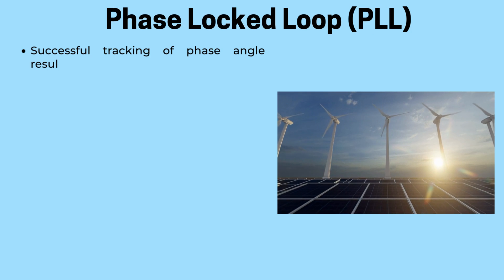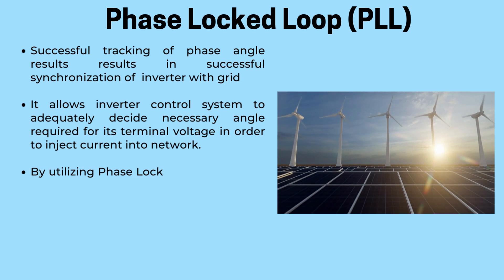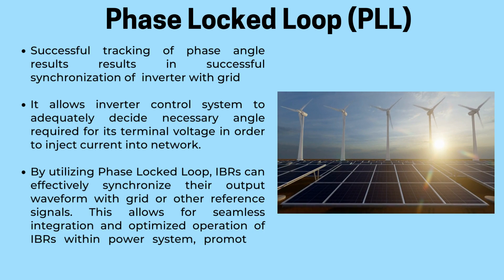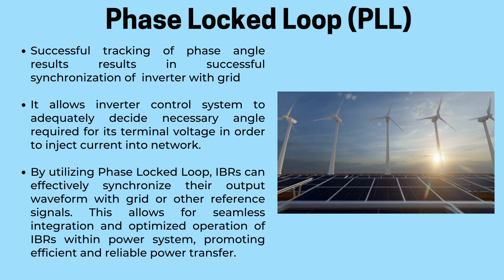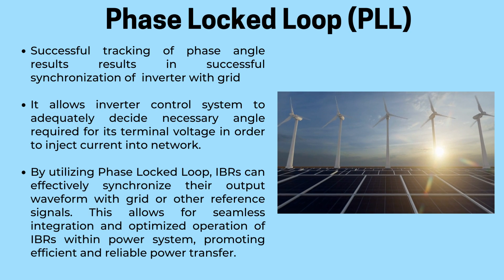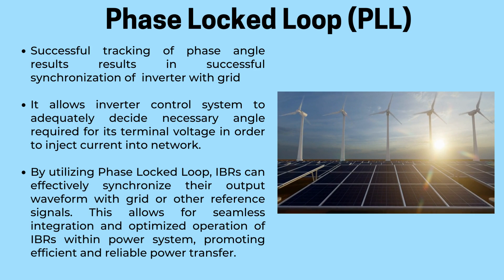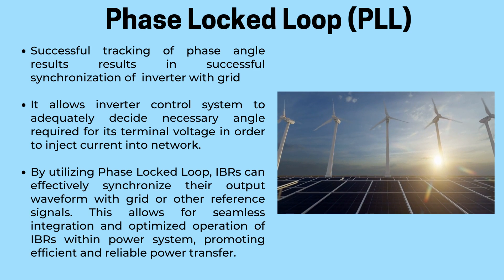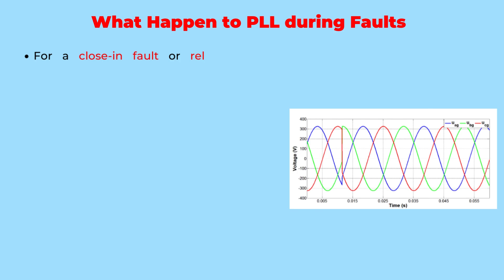The comparison between the output waveform and the reference signal, along with the adjustment of the voltage-controlled oscillator, forms a continuous feedback loop. This ensures that the inverter's output tracks the reference signal accurately over time, maintaining synchronization with the grid or reference source. By utilizing the phase-locked loop, IBRs can effectively synchronize their output waveform with the grid, promoting efficient and reliable power transfer.